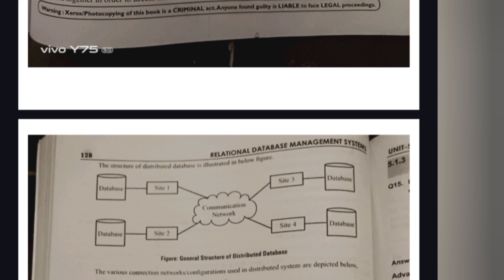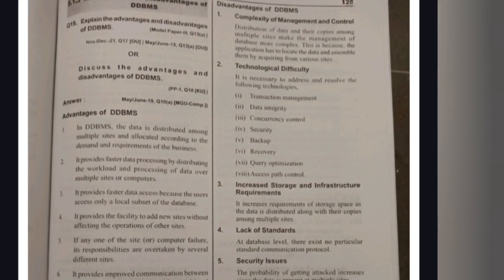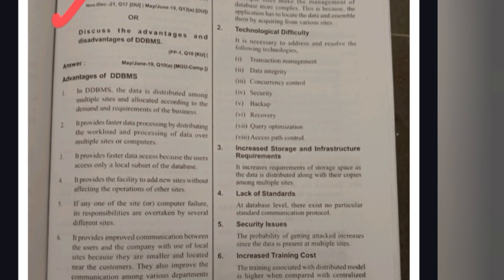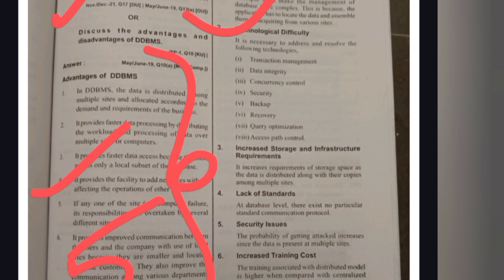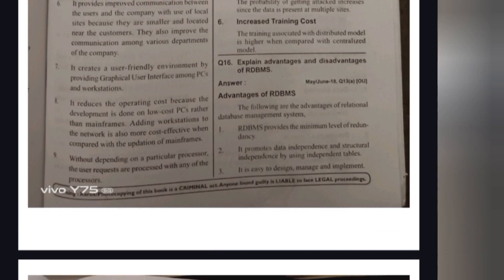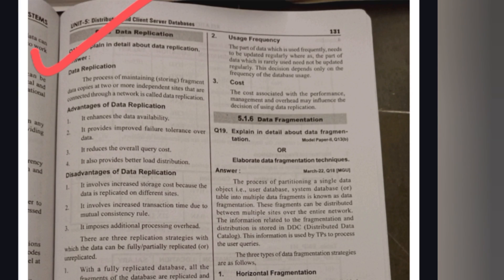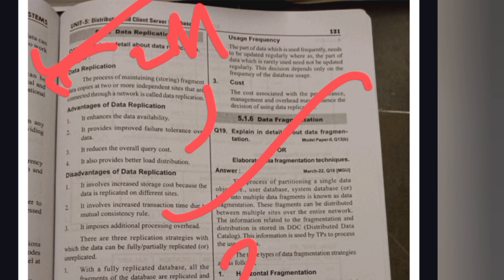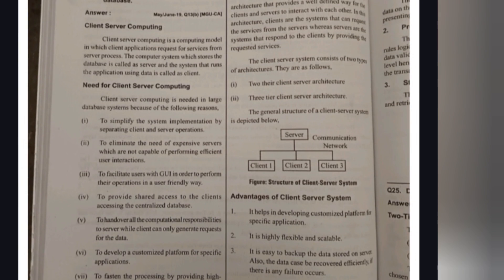From Unit 5, the topic is the Structure of Distributed Database Management System (DDBMS). Learn the advantages — for example, it facilitates adding new sites without affecting operations — and the disadvantages such as issues with data integrity, backup, security, and recovery. Advantages and disadvantages of RDBMS is also an important question. Data Replication is worth two marks, and Data Fragmentation is also important for two marks.